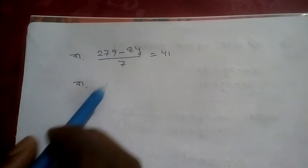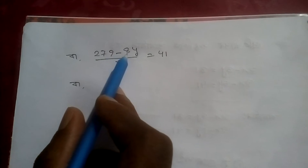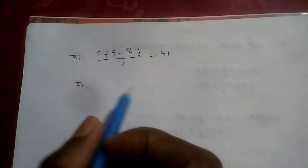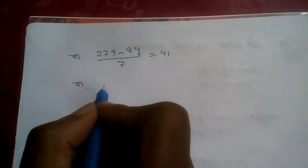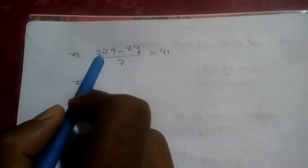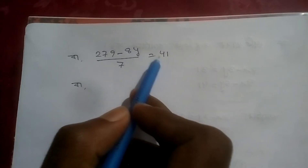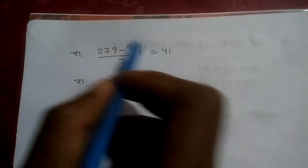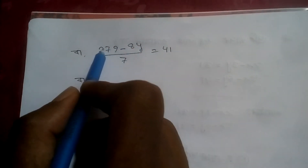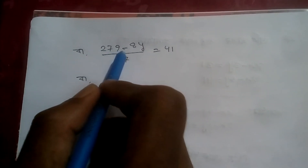Crazy minus square — what do we have to do? So how should we do now? 279 minus 14.